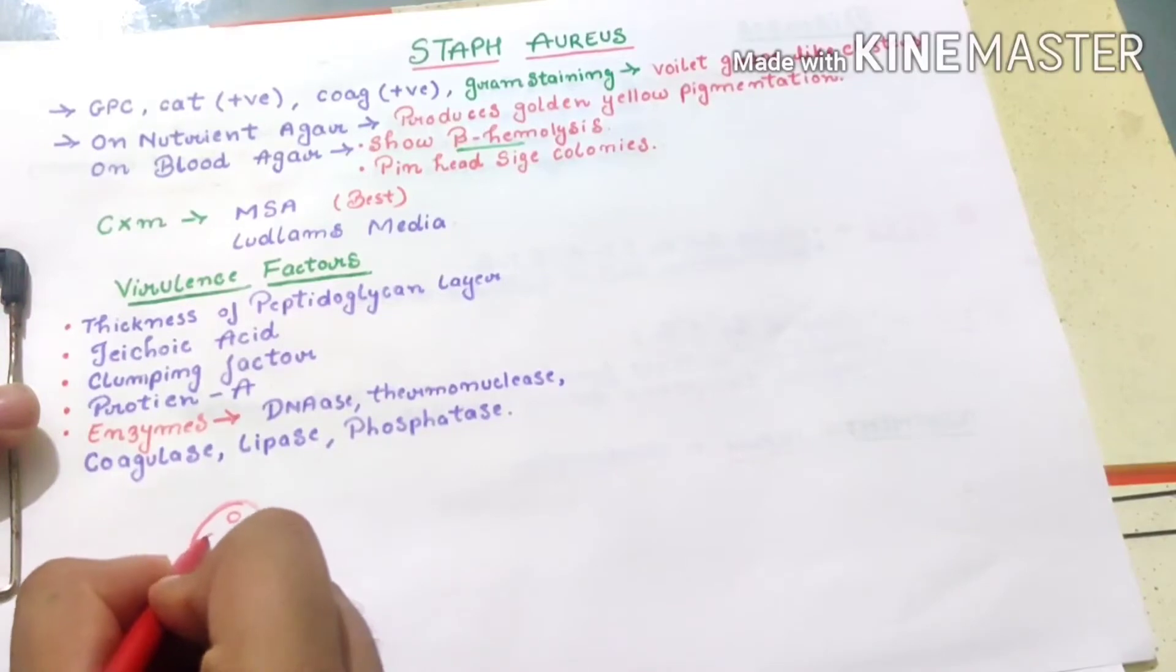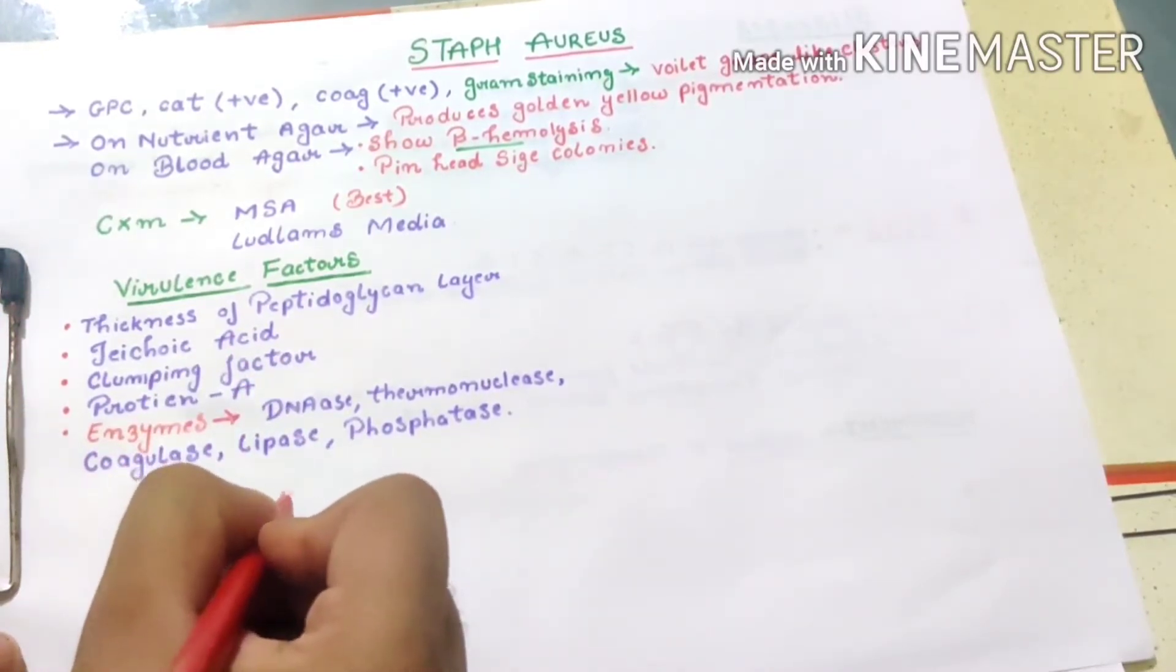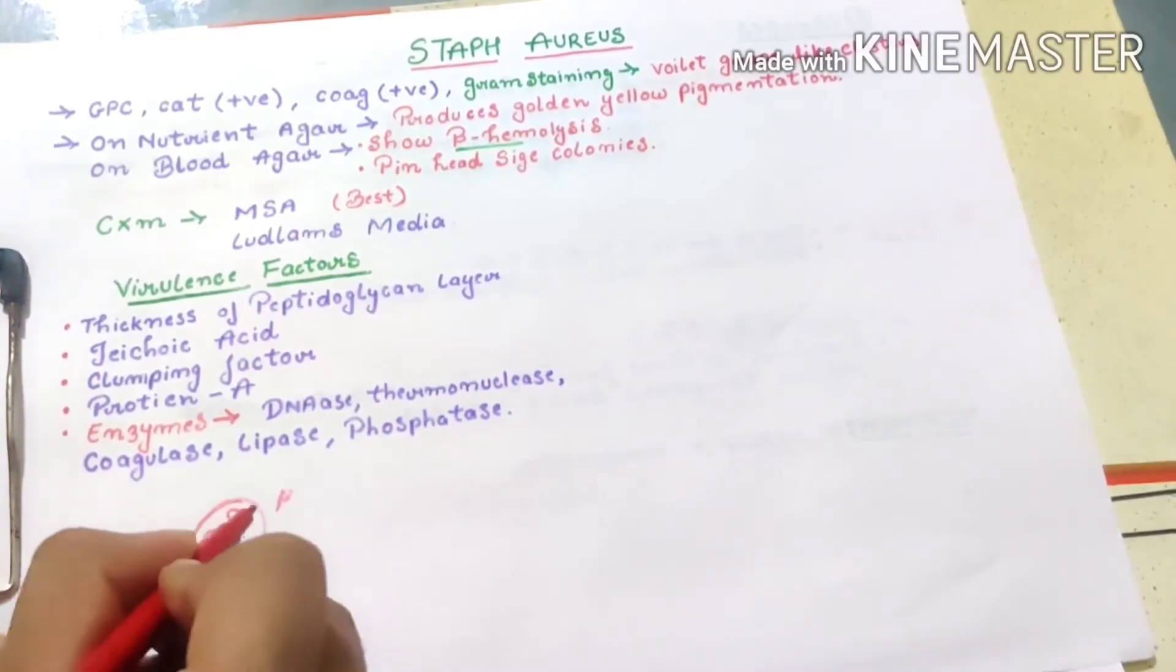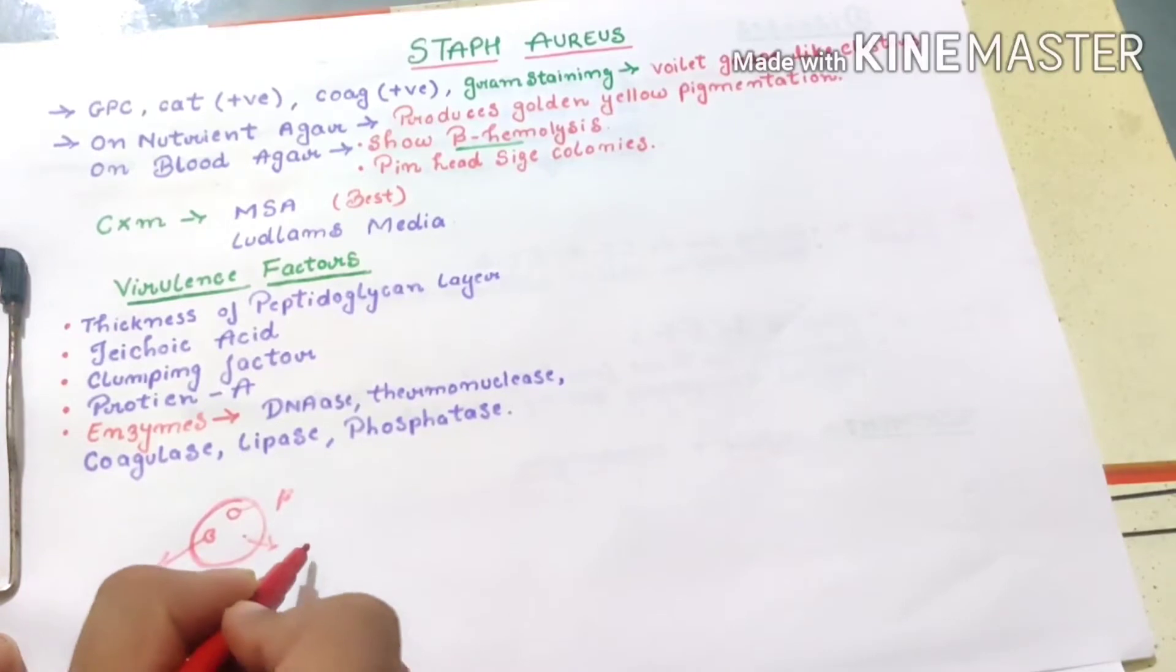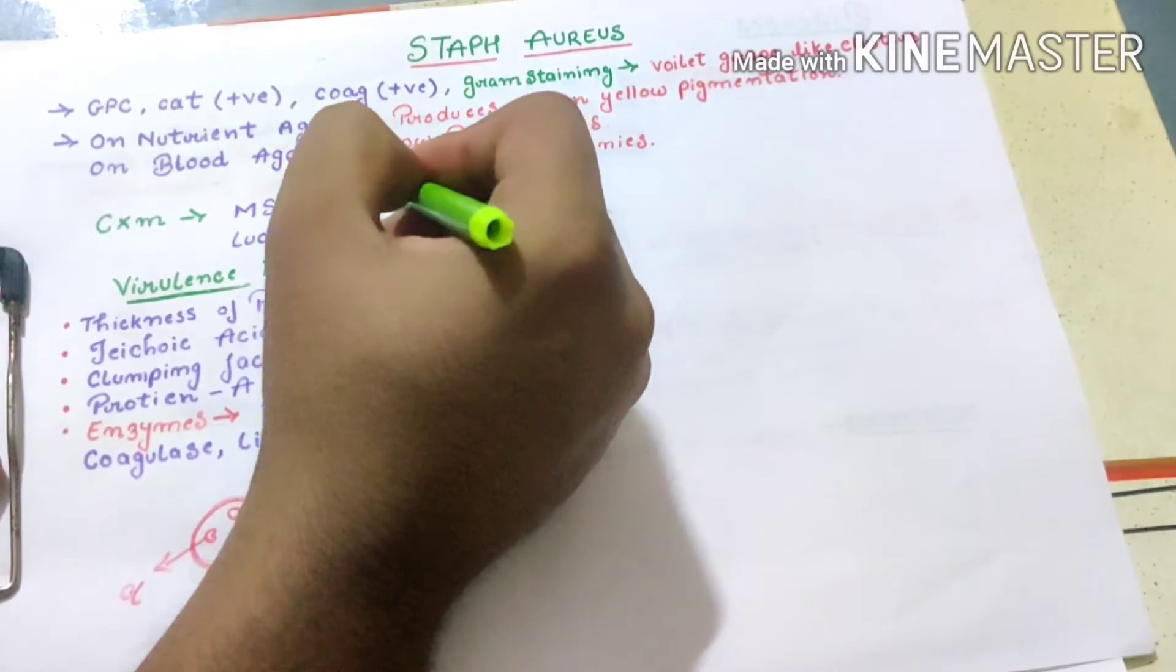There is half hemolysis, incomplete hemolysis is alpha hemolysis, and where hemolysis does not happen is gamma hemolysis. So this Staph aureus is showing beta hemolysis, complete hemolysis, and it has pinhead size colonies.